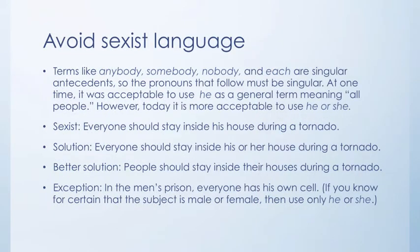When you write, you have to avoid sexist language. Terms like anybody, somebody, nobody, and each are singular antecedents, so the pronouns that follow must be singular. At one time it was acceptable to use he as a general term meaning all people, but today we don't do that — we refer to it as he or she. For example, the sexist version is: Everyone should stay inside his house during a tornado. The solution is: Everyone should stay inside his or her house during a tornado. A better solution is to make the whole thing plural: People should stay inside their houses during a tornado. There is an exception: if you know you are referring to something only masculine or only feminine, use his or her respectively. For example, in the men's prison, everyone has his own cell.